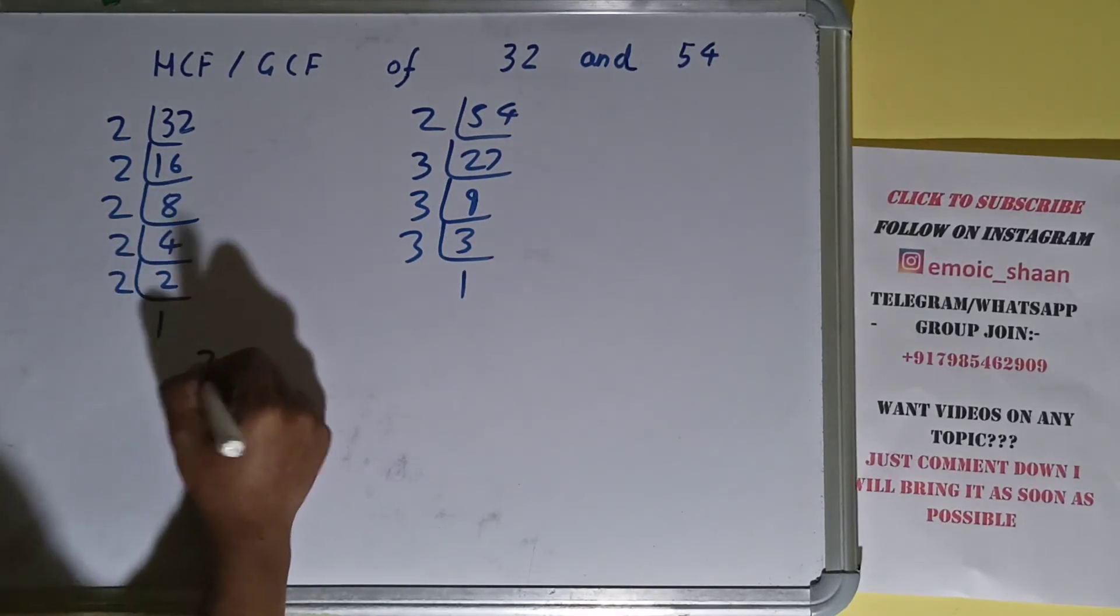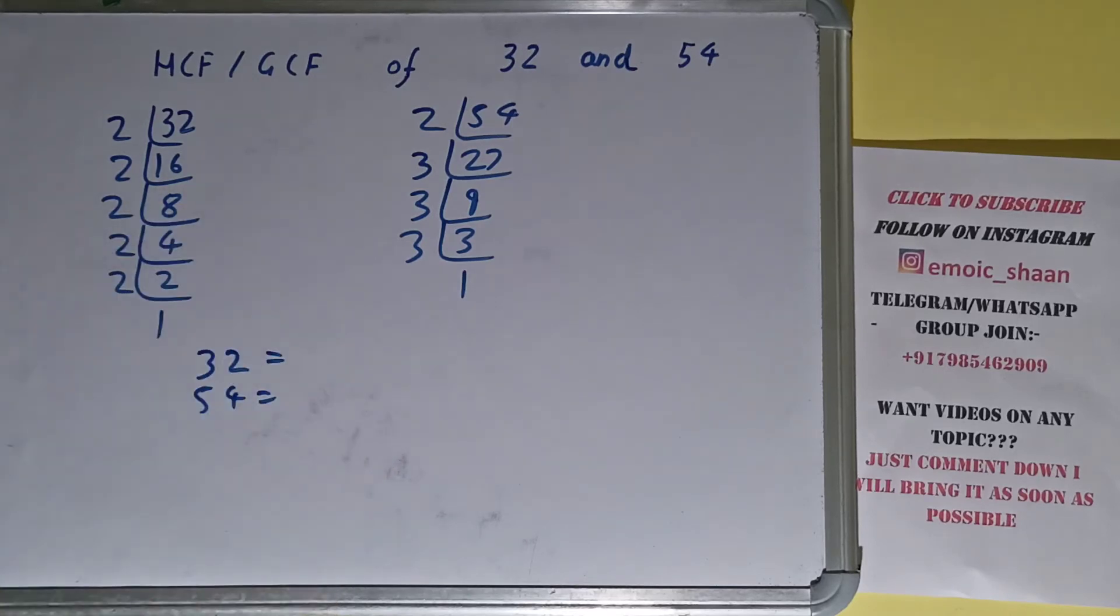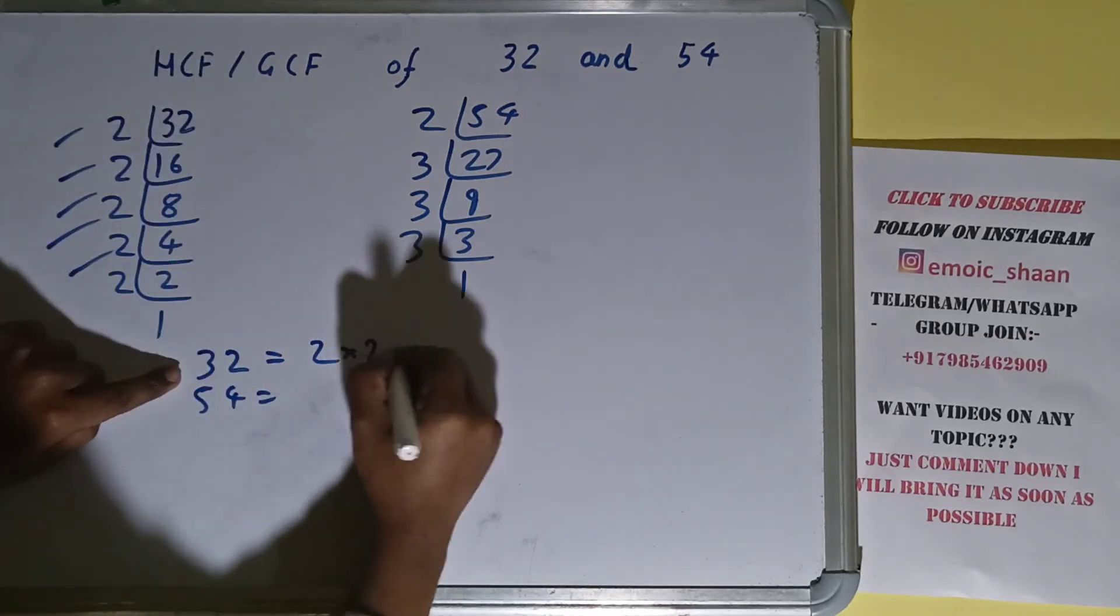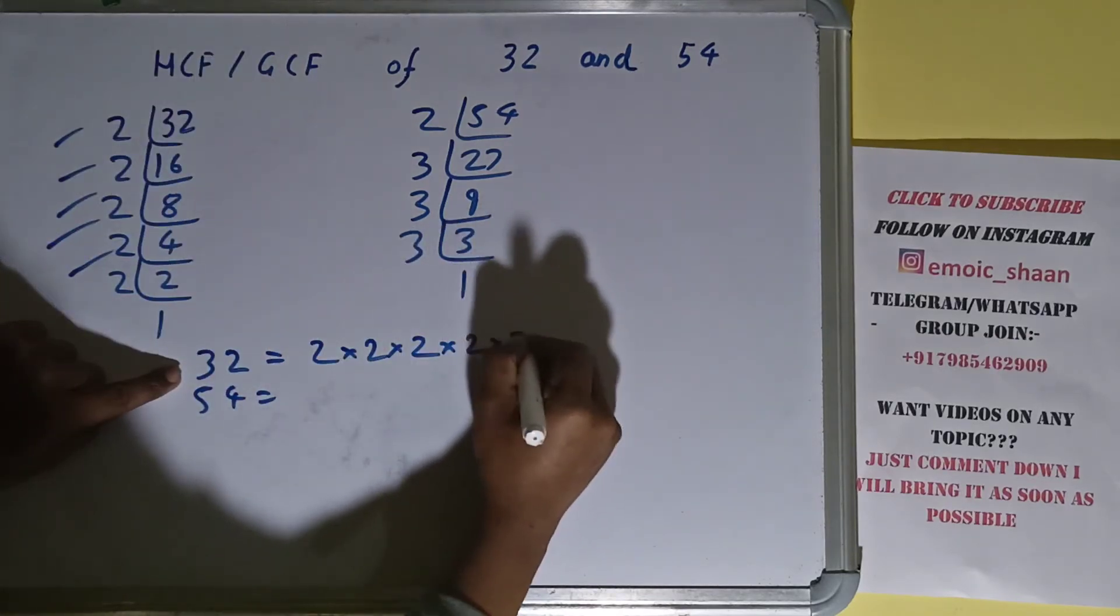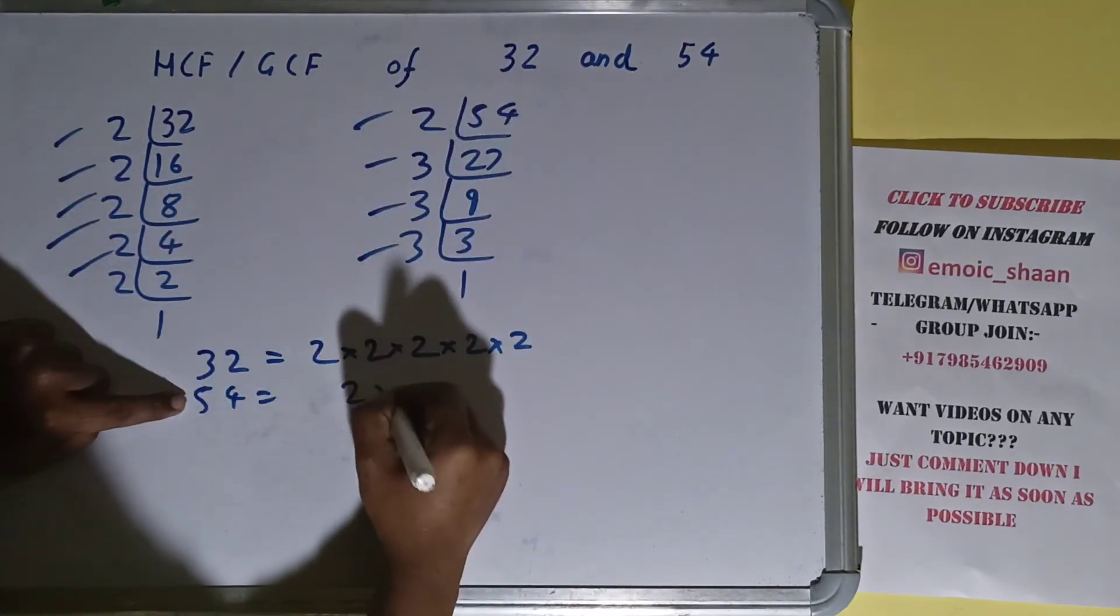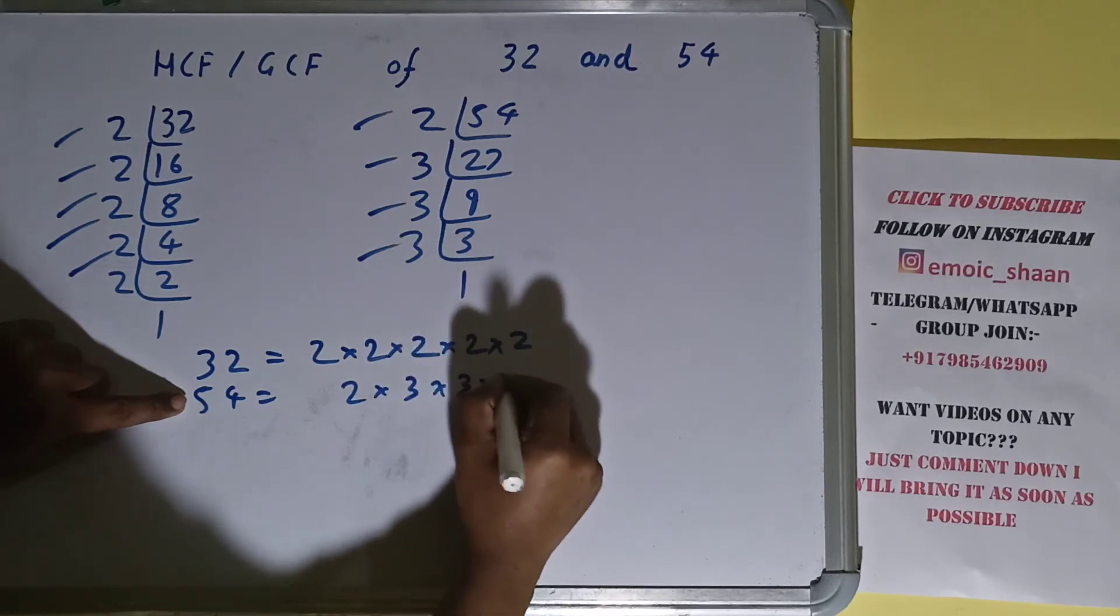The next thing we need to do is write down each of the numbers with their respective prime factors. So for 32, what prime factors we have? 2 × 2 × 2 × 2 × 2. For 54, what prime factors we have? 2 × 3 × 3 × 3.